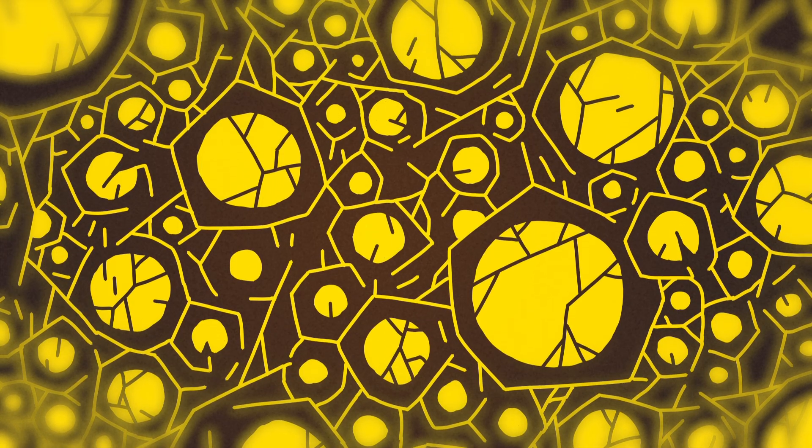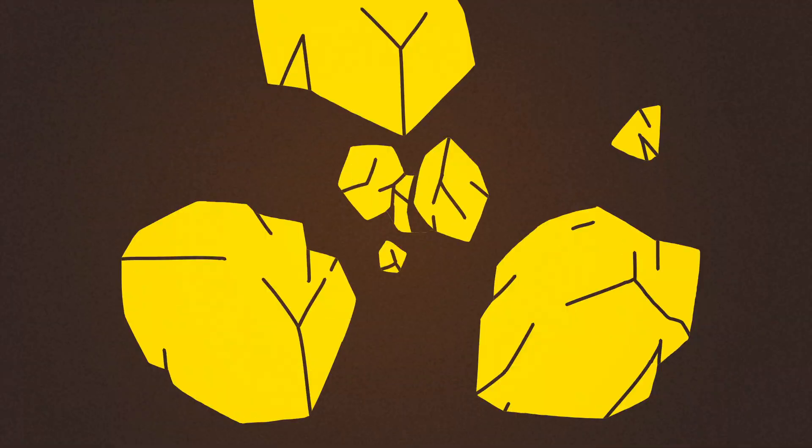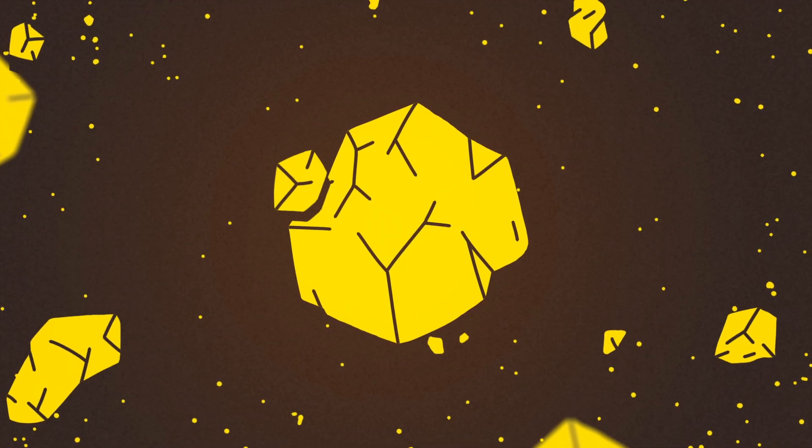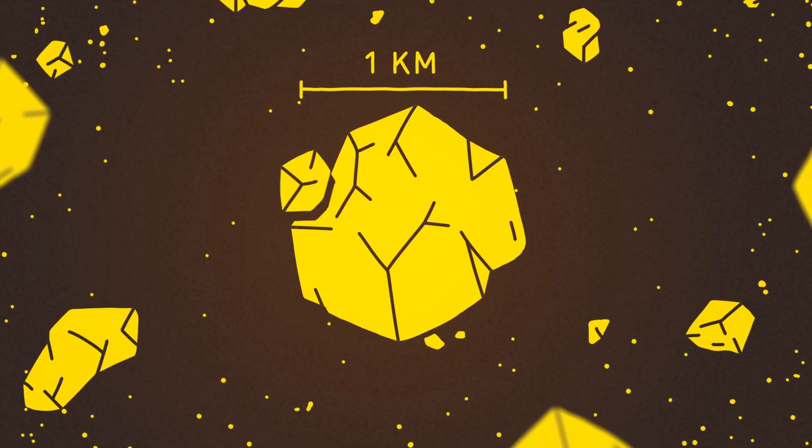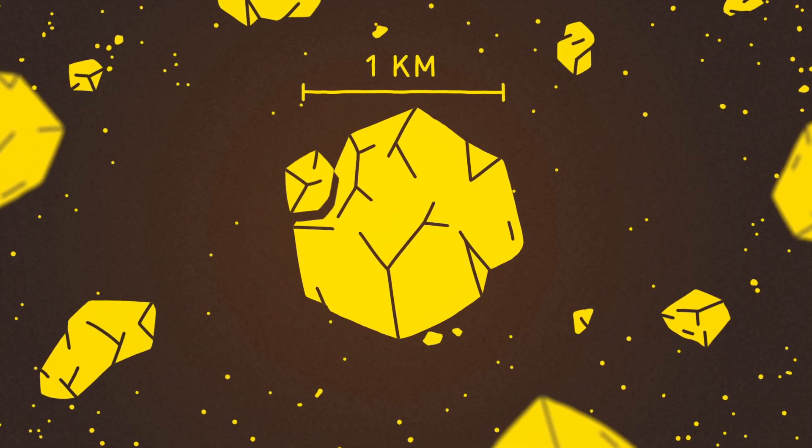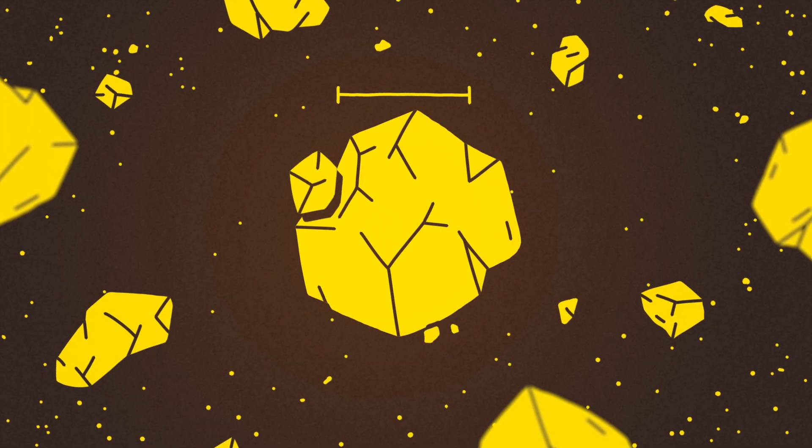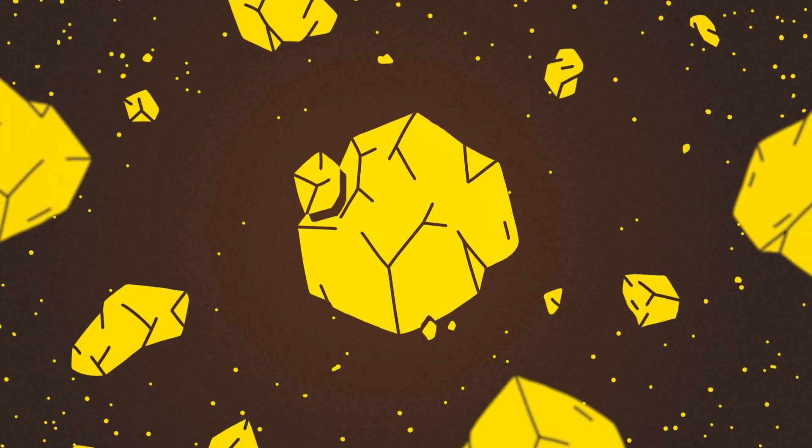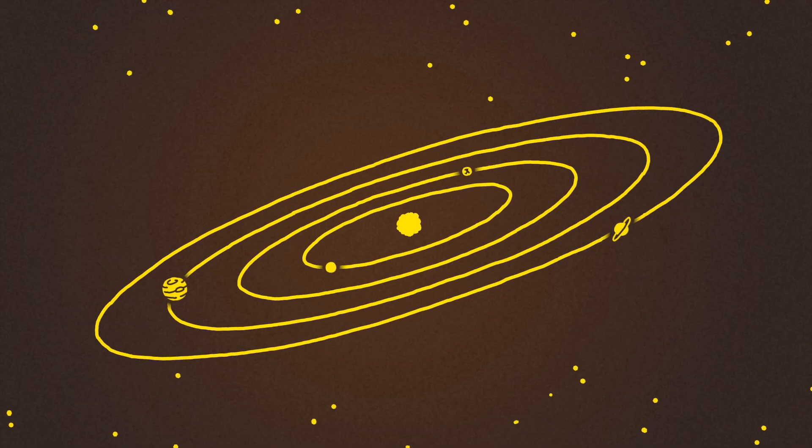Eventually, the chondrule pellets get cemented together inside larger rocks, which at about 1 km across are finally large enough to hold themselves together through gravity. They continue to collide and grow into larger and larger bodies, including the planets we know today.